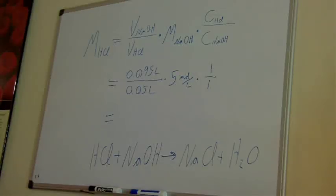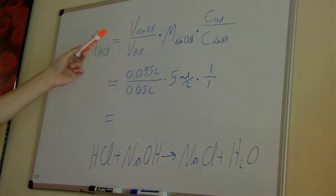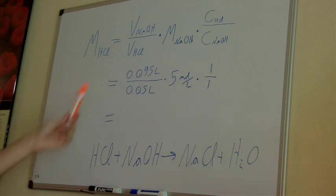So now that everything is complete, here I have a calculation to determine the molarity of my hydrochloric acid. So I have molarity of HCl is equal to the volume of the sodium hydroxide solution that I used divided by the volume of the hydrochloric acid that I started with times the molarity of sodium hydroxide times the coefficient of HCl divided by the coefficient of NaOH.